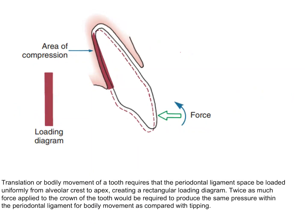When bodily movement takes place, the entire tooth is being moved. The force being applied is not a single force — there is also some torquing being given. Two types of forces are applied on the tooth to bring about translation. In orthodontics it is not possible to pass the force through the center of resistance, so torquing is incorporated within the wire so that the moment of force increases and translation-type movement takes place. Since the entire tooth moves uniformly, there is uniform loading throughout the periodontal area.